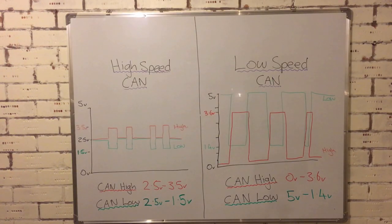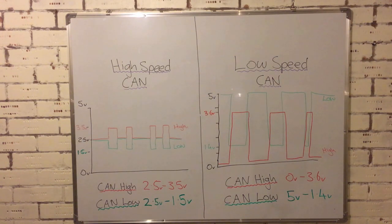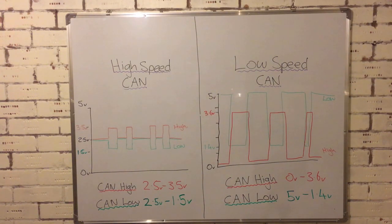On the board I've drawn up two examples, one of a high-speed CAN network and one of a low-speed CAN network. Straight away you can see the main differences between the two. On the high-speed CAN network the voltages start at 2.5 and work out away from each other, and on the low-speed CAN network the voltages start at 5 volts and 0 volts and actually cross over each other. So the operating voltage is really quite different.